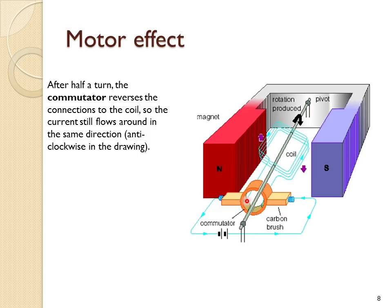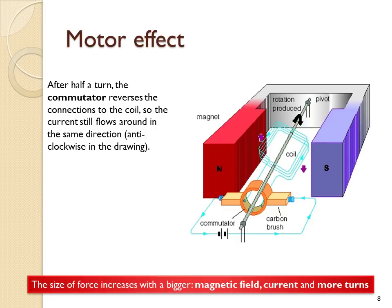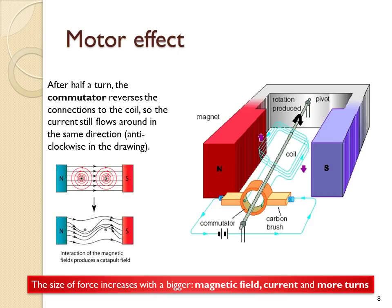After half a turn, the commutator reverses the connections to the coil, so the current still flows around in the same direction — anti-clockwise when viewed from above in this drawing. If you want to make the force bigger with a motor, you'd need a bigger magnetic field, so stronger magnets on the outside, a greater electric current, or more turns of wire. You'd also increase the torque of a motor with a larger area of coil. This drawing shows the magnetic field lines used to produce a catapult field in a motor, where one side of the coil is pushed up and the other side is pushed down.